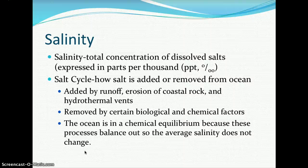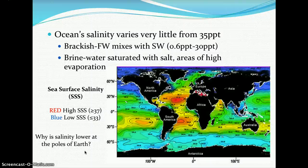Salinity is the total concentration of dissolved salts, expressed in parts per thousand (ppt). Salt can be added to the ocean through runoff, erosion of coastal rock, and hydrothermal vents, and removed by biological and chemical factors. The ocean is in equilibrium because these processes balance each other, keeping the average salinity stable. Ocean salinity varies very little from 35 ppt. In brackish environments where fresh water mixes with salt water, salinity ranges from 0.6 to 30 ppt.